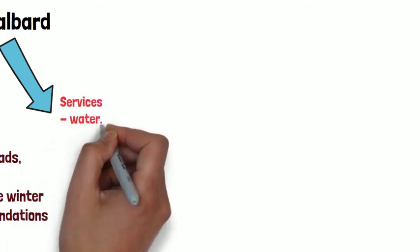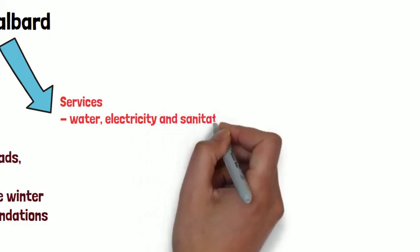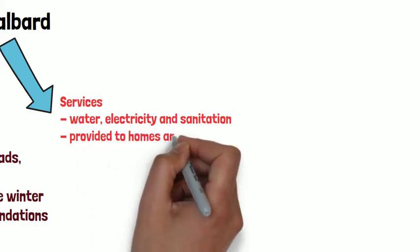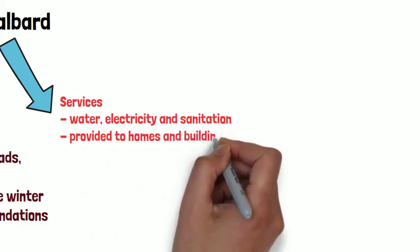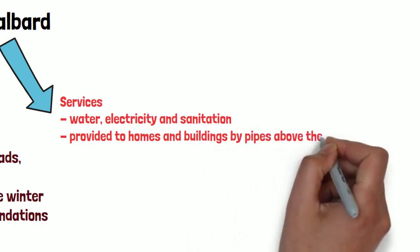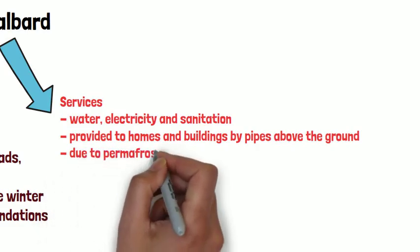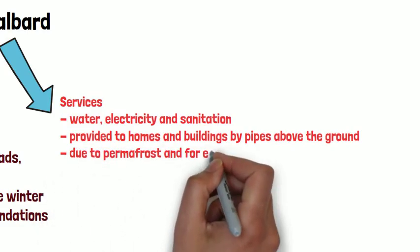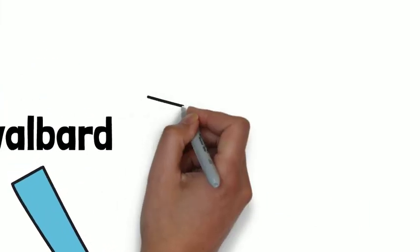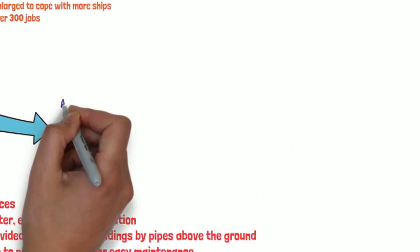The next challenge is services — water, electricity, sewage, waste and sanitation — all of which have to be piped to each of the different houses, office blocks, etc. However, these pipes can't be dug under the ground because they would freeze and be useless. So they have to be built above the permafrost and are usually heated so that they don't freeze and can actually be used.